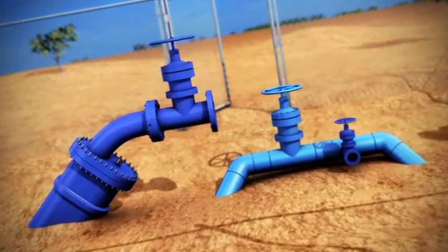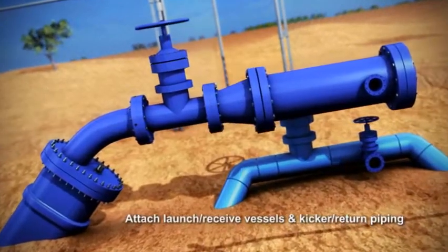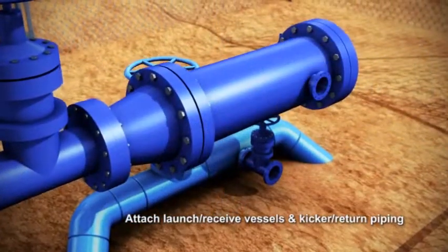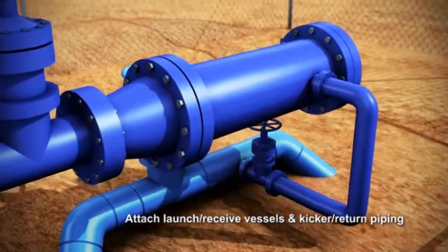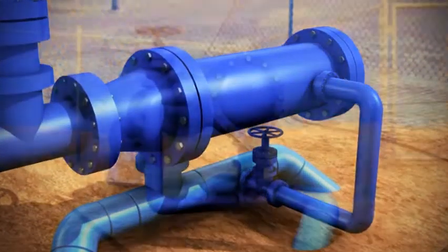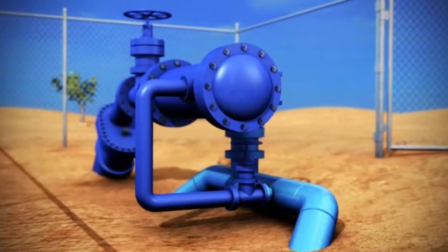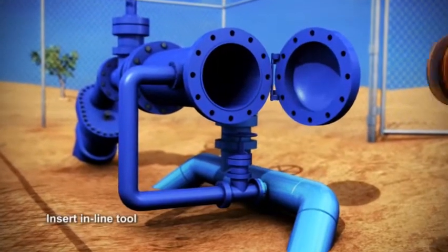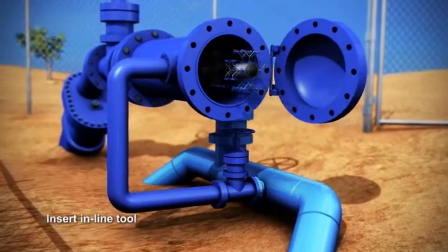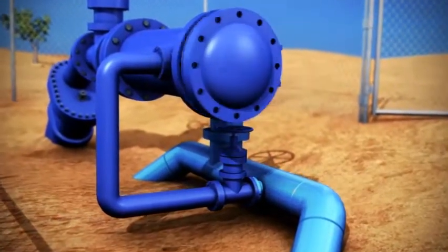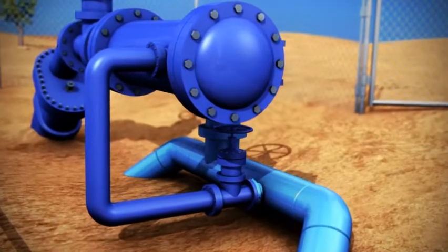Mechanically, attach the launch and receive vessels to the Y isolation valves and install the kicker and return piping. Insert the in-line inspection tool into the launch vessel, secure the launch vessel door and pressurize using the kicker piping and isolation valves.